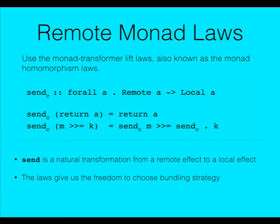Let's think about some laws for remote monads. Let's pick up the monad transformer laws from the monad transformer paper from 1995, also known as the homomorphism laws. We have a send, which is a natural transformation that takes a remote monad — some arbitrary monad — and runs it locally, where the remote runs at the remote location and you get the result locally. There's a local effect which is your result, and a remote execution. The obvious rules: if you return the value and that's all you do, that's the same as returning the value. And if you do two actions, you can always divide them into separate transactions. The laws apply both ways — if you have two computations, you can join them together and get a single computation, a single bundle sent across.